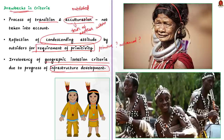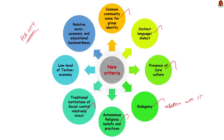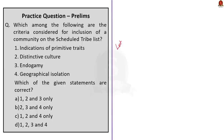Owing to these reasons, the government constituted a task force on scheduling of tribes under the leadership of the then Tribal Affairs Secretary, Rushikesh Panda, in February 2014. The proposed criteria under the government's task force include: common community name for group identity, distinct language or dialect, presence of core culture relating to life cycle, songs, dances, paintings and folklore, endogamy or in case of exogamy marital relationships primarily with other ST population, autonomous religious beliefs and practices, traditional institutions of social control relatively intact, low level of techno-economy, and relative socio-economic and educational backwardness. As of now, only the Lokur Committee criteria is followed, and we have to wait and see what the government decides regarding the adoption of new criteria.